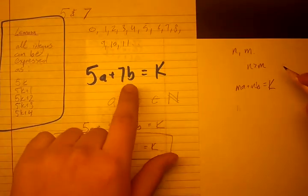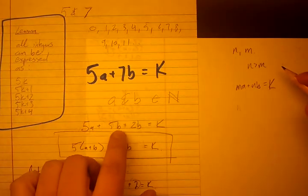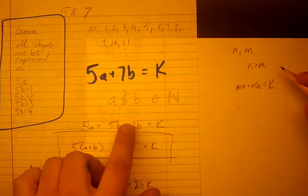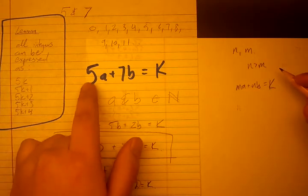Now remember what we did. We broke up the bigger number, the 7b, into smaller parts. We broke it up into a 5b and a 2b. I used 5 because I saw the 5 here and I wanted to group it.